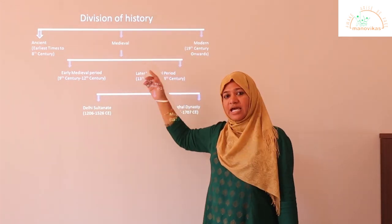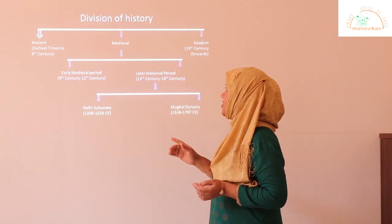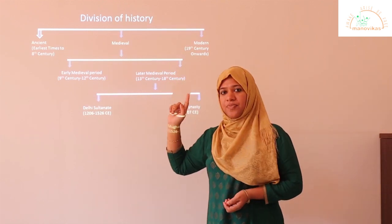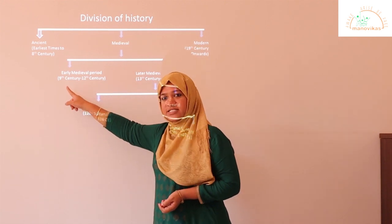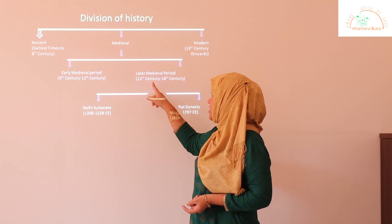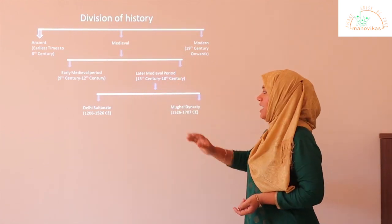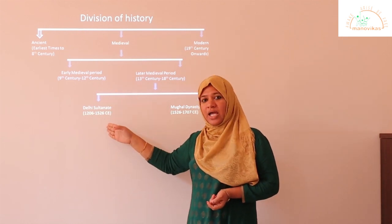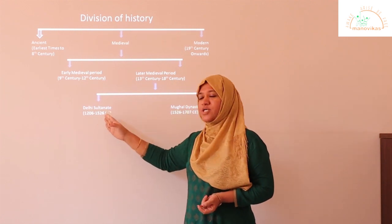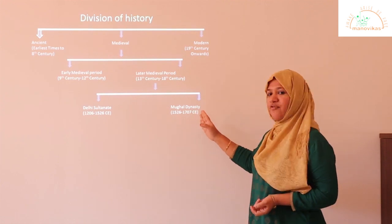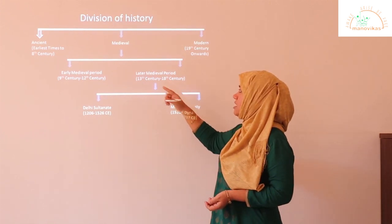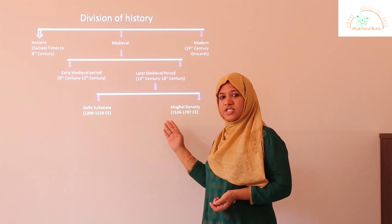The medieval period in India covers a large span, and that is why it is again divided into the early medieval period and the later medieval period. The early medieval period extends from the 9th century to the 12th century. The later medieval period extends from the 13th century to the 18th century, and includes the coming of the Delhi Sultans from the 13th to 16th century CE, and the rule of the Mughal dynasty from the 16th to the 18th century CE. We are going to learn about this later in class 7.